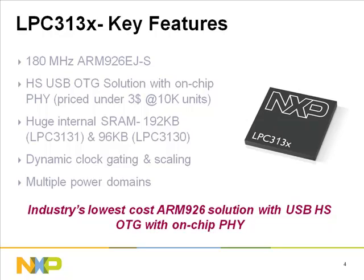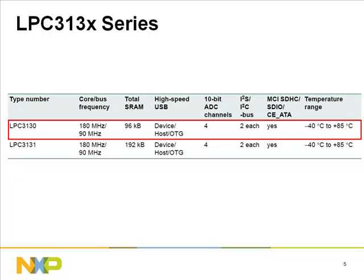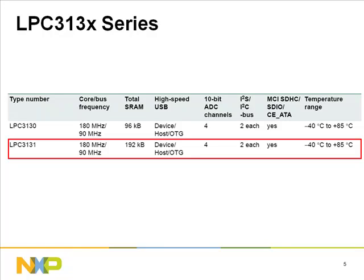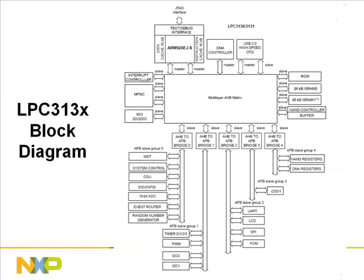The LPC 313X series is industry's lowest cost ARM 926 solution with high-speed OTG and integrated PHY. The series comes in two flavors: LPC 3130 and LPC 3131. Both devices share the same 180 MHz operating frequency and peripheral set, including a USB high-speed OTG controller, 10-bit ADC, I2S, I2C interfaces, and external memory interfaces. The only difference is the internal RAM size, reduced to 96K for LPC 3130.